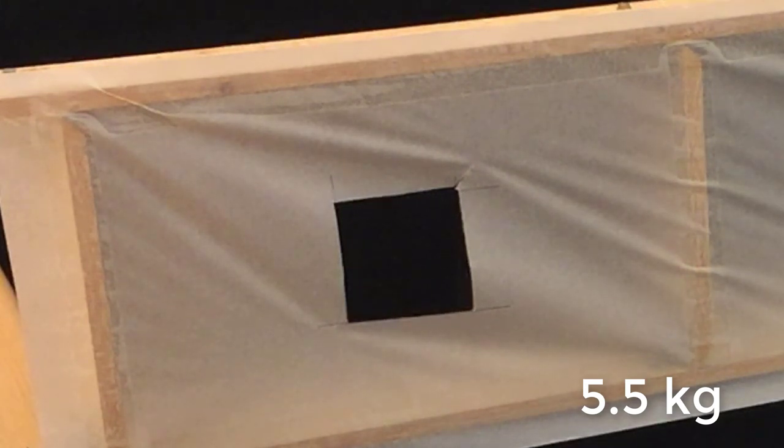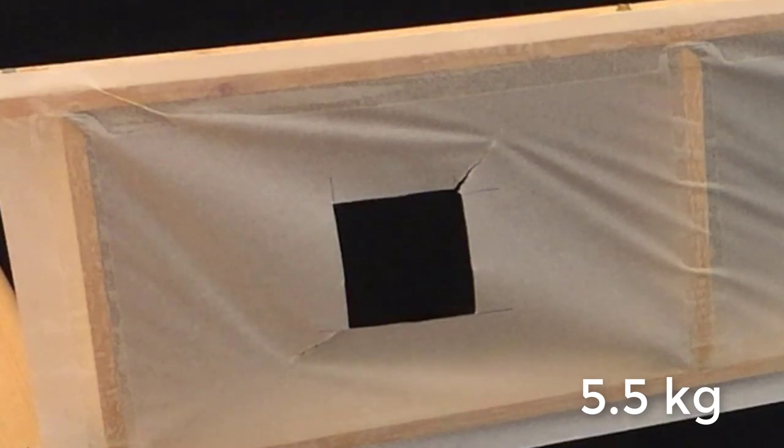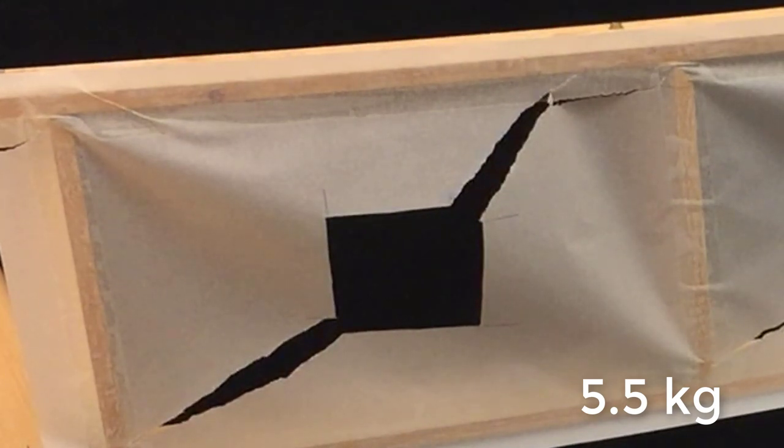On the opposite corner, there's also another tear forming. Even though we've now stopped adding weight, the tears continue to grow until they reach the frame edges, the final failure point, with a load of 5.5 kg.